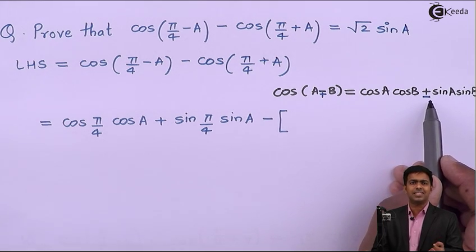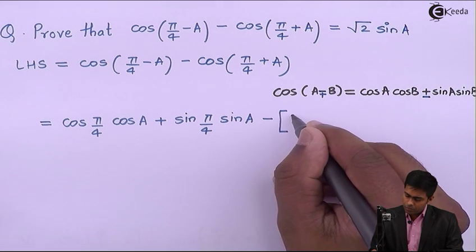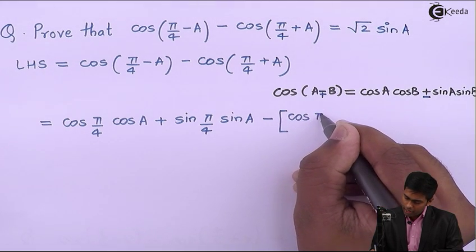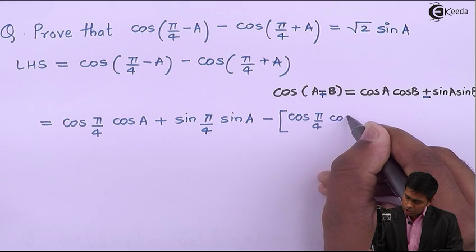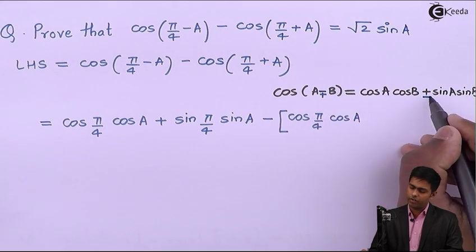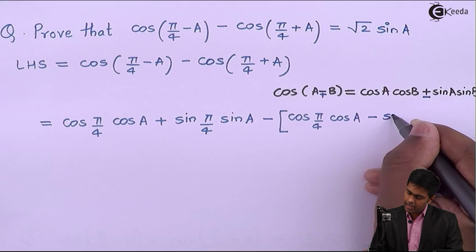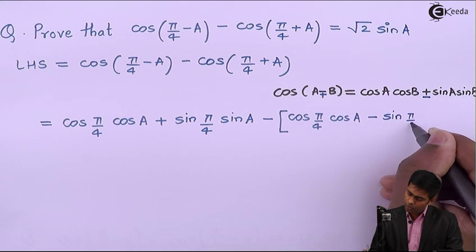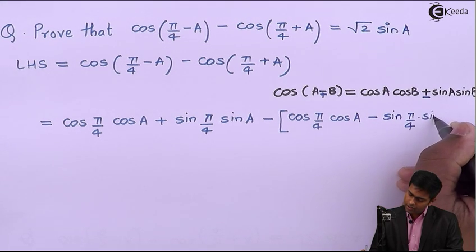By using the same formula and just changing the sign, we will get cos(π/4) cos A minus sin(π/4) sin A.